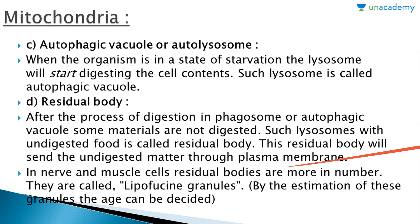In nerve and muscle cells, the residual bodies are more in number. They are called lipofuscin granules. By estimating these granules, the age of the cell can be determined. The more the number of lipofuscin granules in a cell, the greater the age it has achieved.